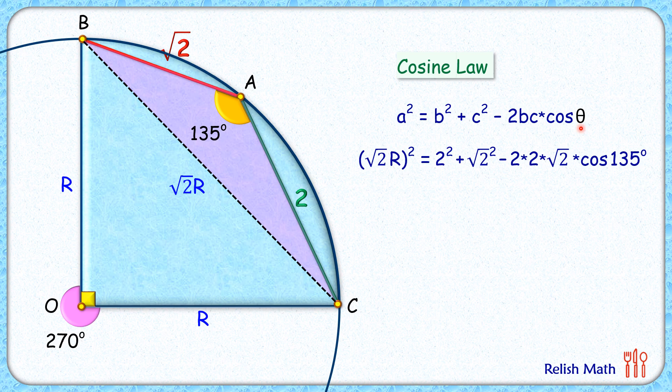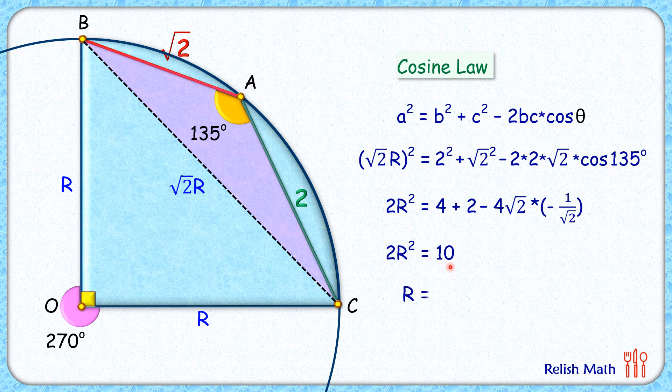Now opening the bracket and simplifying it, and putting value of cos 135 as minus 1 upon root 2, we'll get this equation. Simplifying it will get 2R squared equals 10, or R squared is 5, and R is root 5 centimeter. And that's our answer.